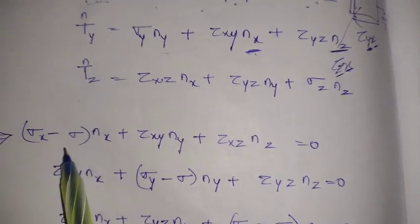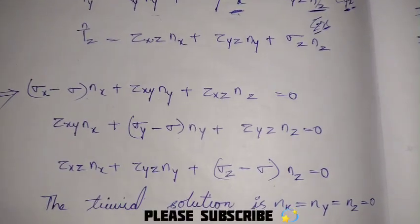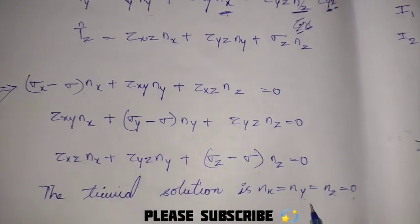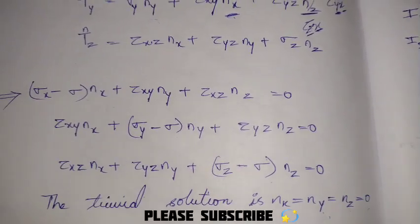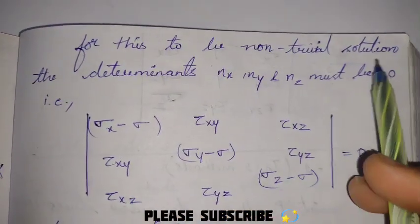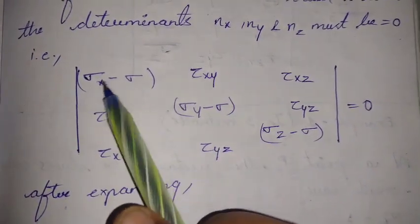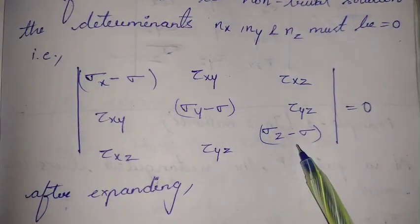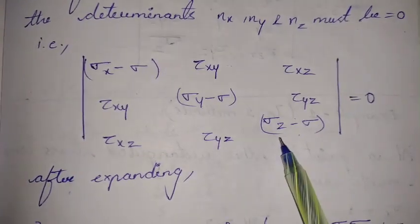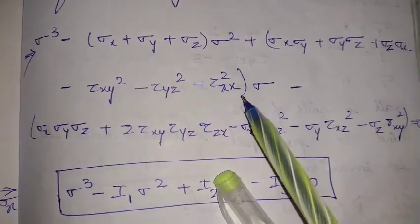After subtracting, we get (sigma_x - sigma), (sigma_y - sigma), (sigma_z - sigma). The trivial solution is nx = ny = nz = 0. But for a non-trivial solution, the determinant of the coefficient matrix must equal zero. In that matrix the diagonal elements are (sigma_x - sigma), (sigma_y - sigma), (sigma_z - sigma), and the off-diagonal elements are the shear stresses. After expanding the determinant we get the characteristic equation.